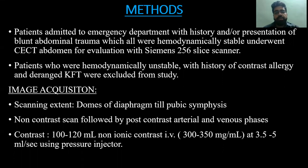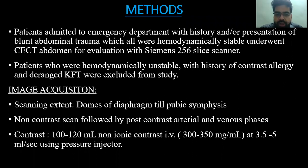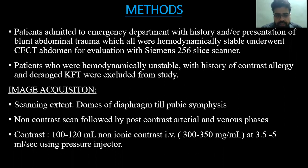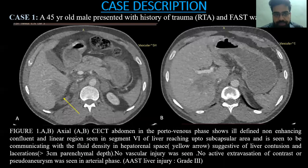Regarding methods: patients admitted to the MRI department with history and/or presentation of Blunt Abdominal Trauma who were hemodynamically stable underwent CECT abdomen with a 256-slice CT scanner. Patients who were hemodynamically unstable, with history of contrast allergy, or deranged KFT were excluded from the study. Scanning extent was from the dome of the diaphragm to the pubic symphysis. A non-contrast scan was followed by post-contrast arterial and venous phases. Contrast used was 100–120 ml of non-ionic intravenous contrast at 3.5 to 5 ml/s using a pressure injector.